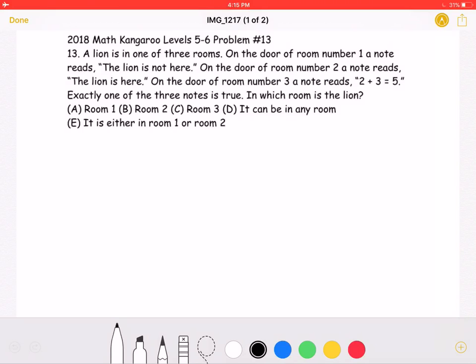Exactly one of the three notes is true. In which room is the lion? A, room 1. B, room 2. C, room 3. D, it can be in any room. Or E, it is either in room 1 or room 2.